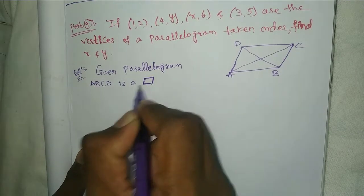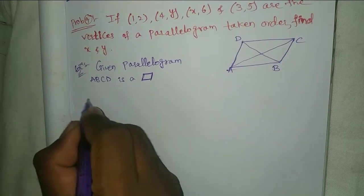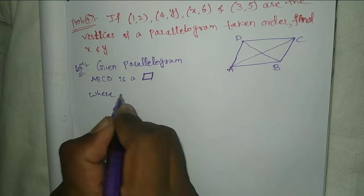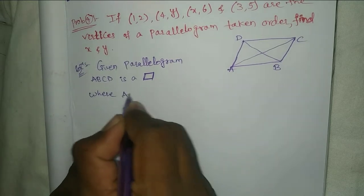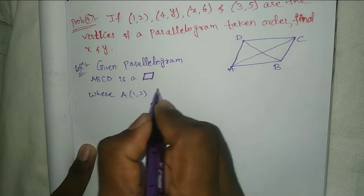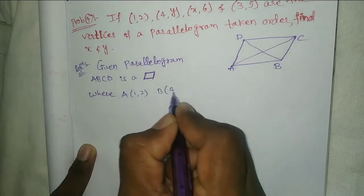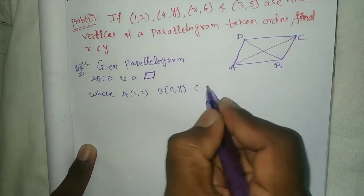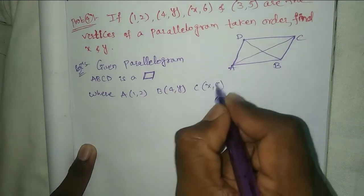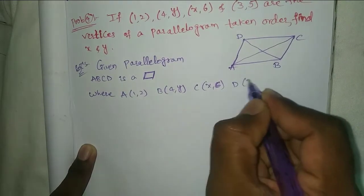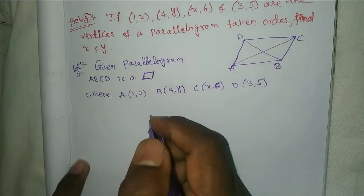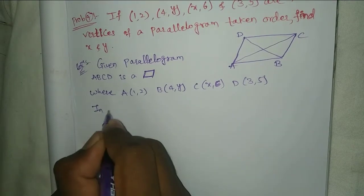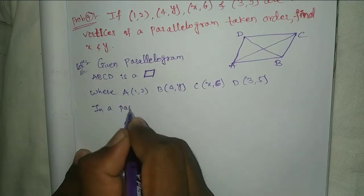This is the parallelogram symbol, where A(1,2), B(4,y), C(x,6), D(3,5).